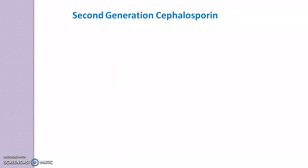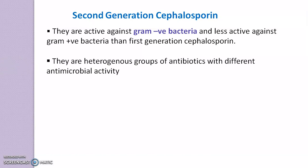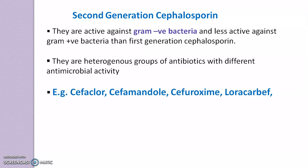Moving to the 2nd generation cephalosporins: they are active against gram-negative bacteria and less active against gram-positive bacteria than 1st generation cephalosporins. They are a heterogeneous group of antibiotics with different antimicrobial activities. Examples include Cefaclor, Cefamandole, Cefuroxime, and Loracarbef.